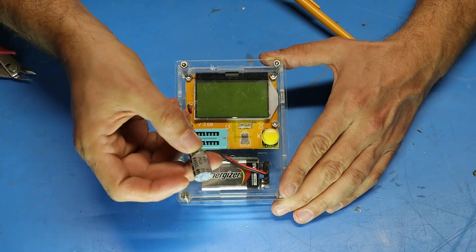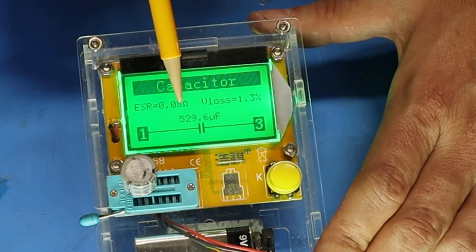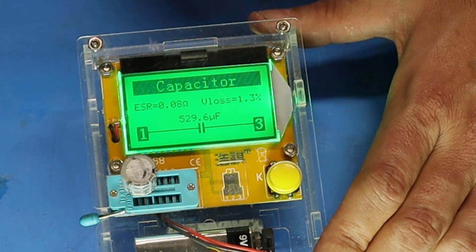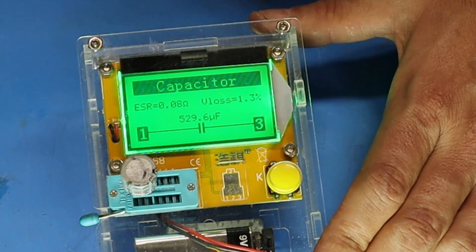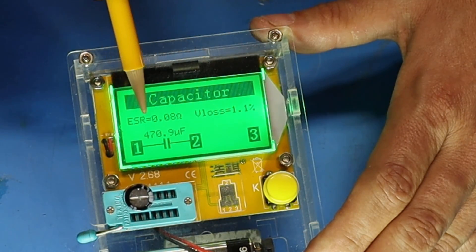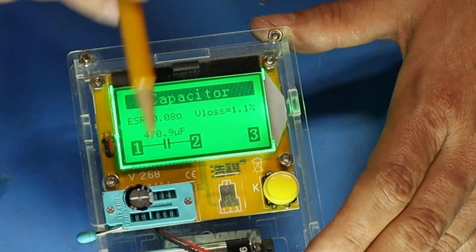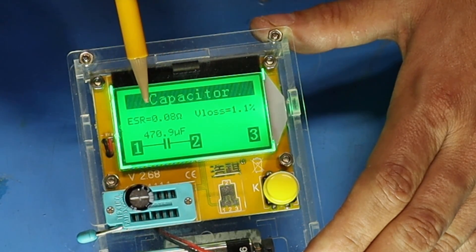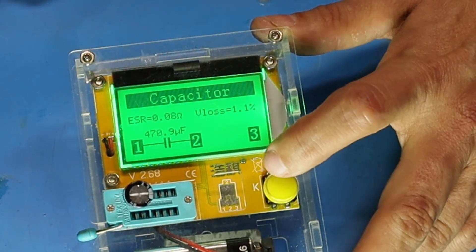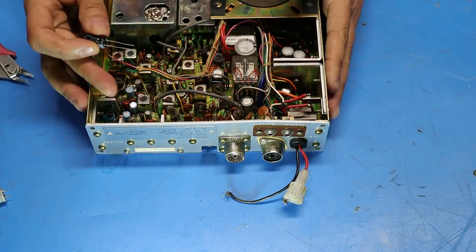Now let's test out the old capacitor and compare it to the new one. 529.6 microfarads, an ESR of 0.08 and a V loss of 1.3%. Let's check the new capacitor. Okay so here's the new capacitor. 470.9 microfarads, so quite a bit closer to nominal. An ESR of 0.08 and a V loss of 1.1%. So now that I know the new capacitor checks out good I can insert it into the radio.